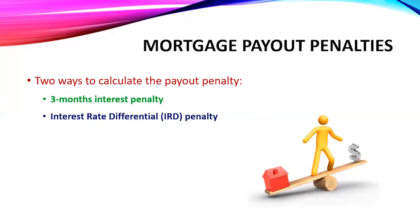In a three-month interest penalty, the lender will charge three months' worth of interest as the penalty for breaking the mortgage. This tends to happen when it's a variable rate mortgage. But if somebody has a fixed-rate mortgage, then the lender will charge the greater of the two amounts — so whichever amount comes out to be higher, that's the one the lender will charge.